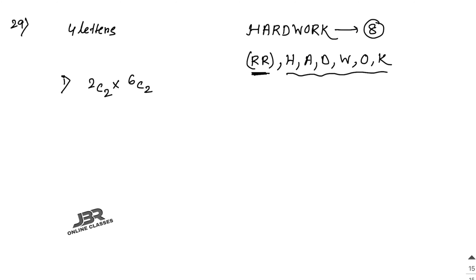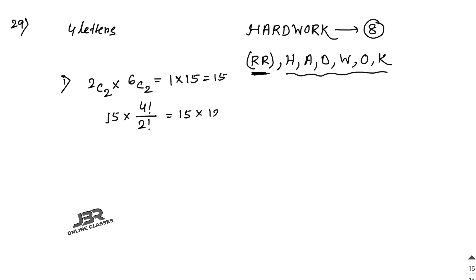6C2 = 15, so 2C2 × 6C2 = 1 × 15 = 15 selections. Within each selection, we have 2 R's and 2 other different letters, which can be rearranged among themselves. So the final count for Case 1 is 15 × (4!/2!) = 15 × 12 = 180.